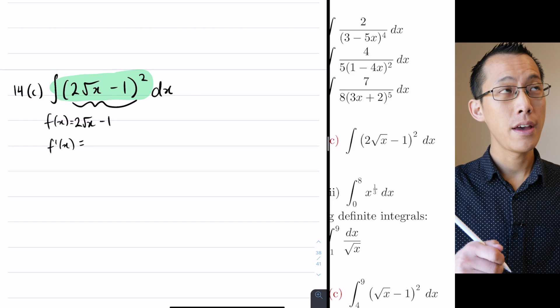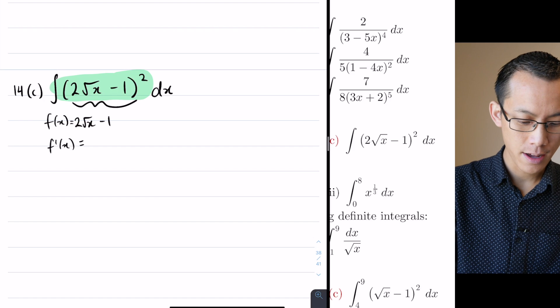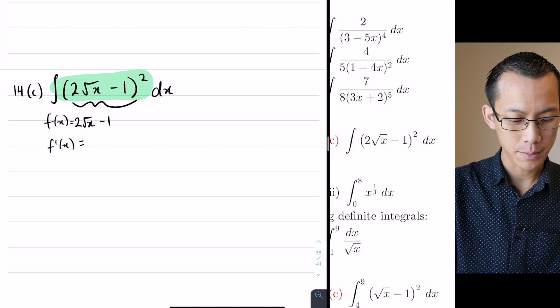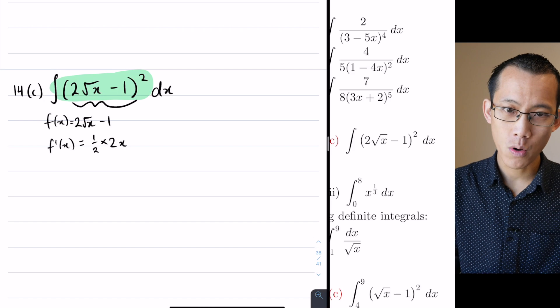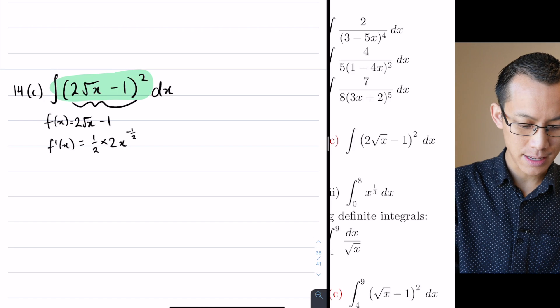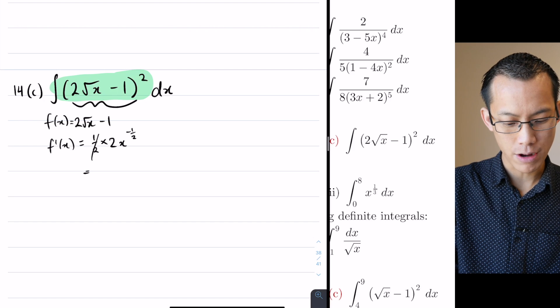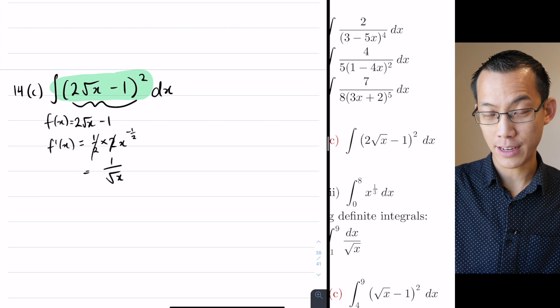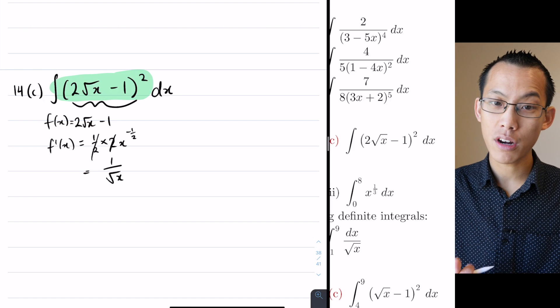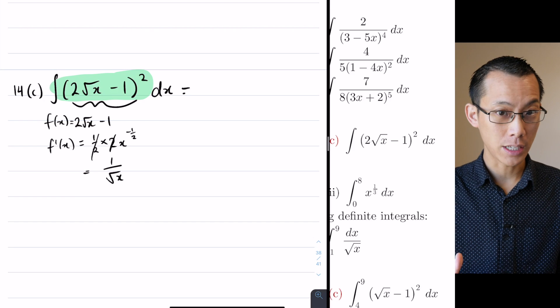2 root x is 2x to the power of a half. So if I were to differentiate that, I would have the half comes down, and then I reduce the power by 1. Now that's not just a constant, is it? That's actually what's going to happen here: 1 on root x. So you can't just multiply or divide by 1 over root x to make it nice and neat. It's not a constant coefficient. So that's why the way to go with this is definitely to expand.